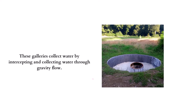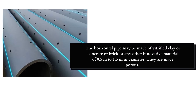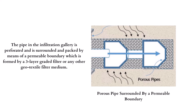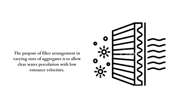These galleries collect water by intercepting and collecting it through gravitational flow. The pipes used for water entry into the gallery are horizontal pipes made of vitrified clay, concrete, brick, or other innovative materials. They have a diameter varying from 0.5 meters to 1.5 meters, and are made porous so that filtered, clear water enters the gallery. The pipe in the infiltration gallery is perforated and surrounded by a permeable boundary formed by a 3-layer graded filter or geotextile filter medium.